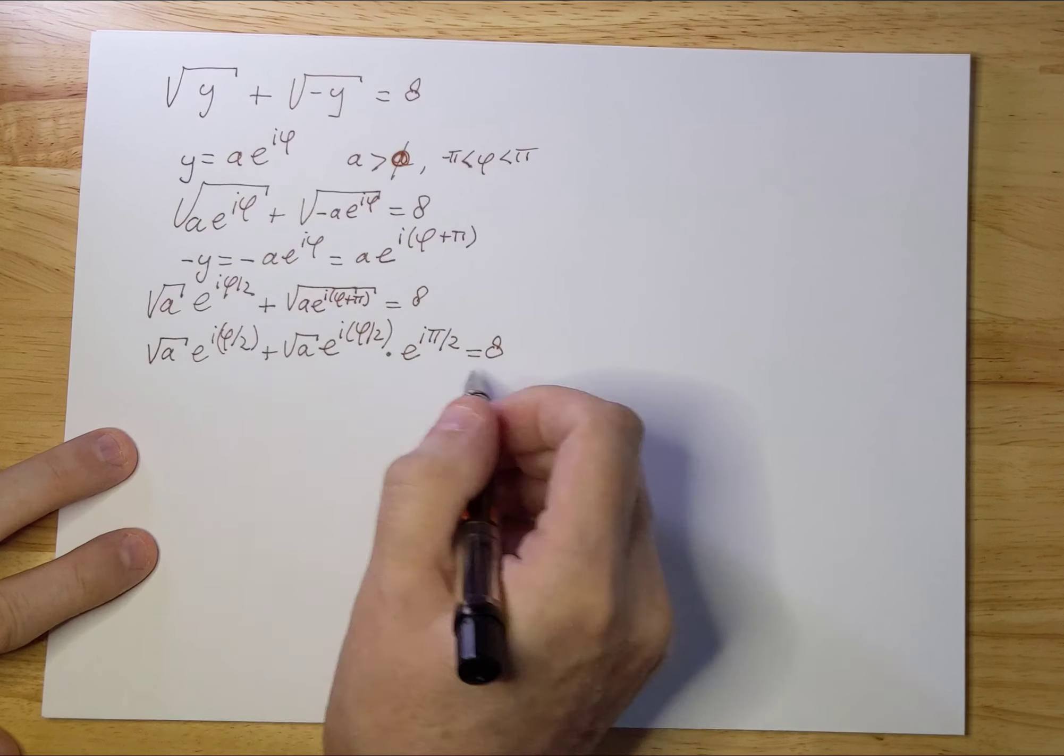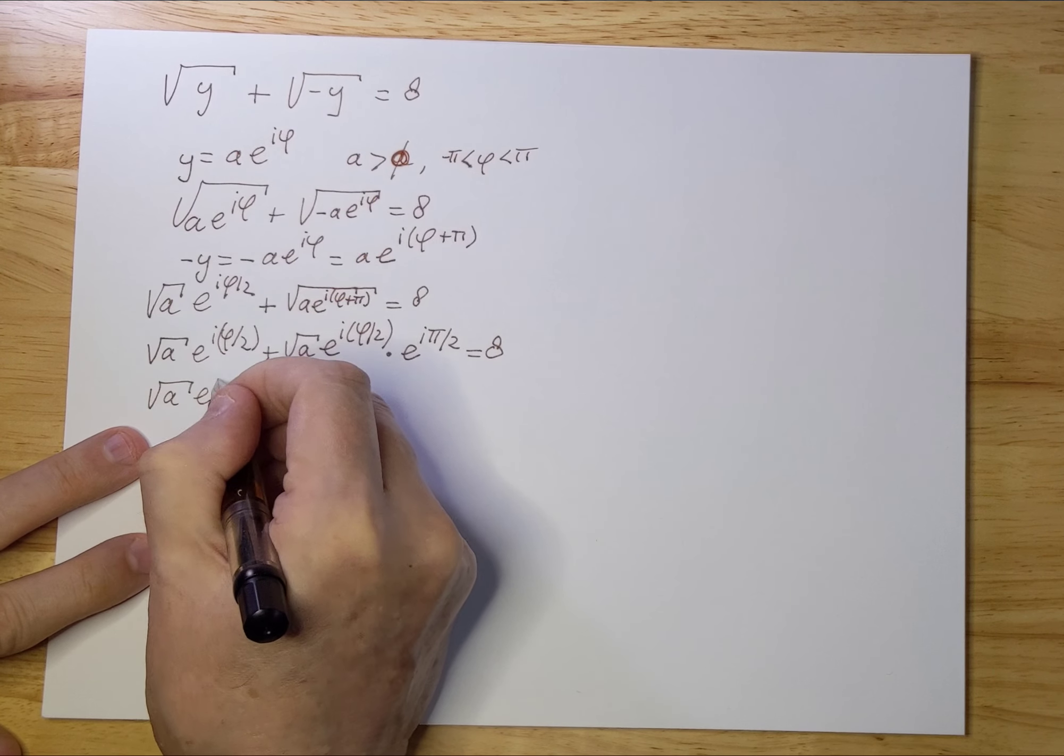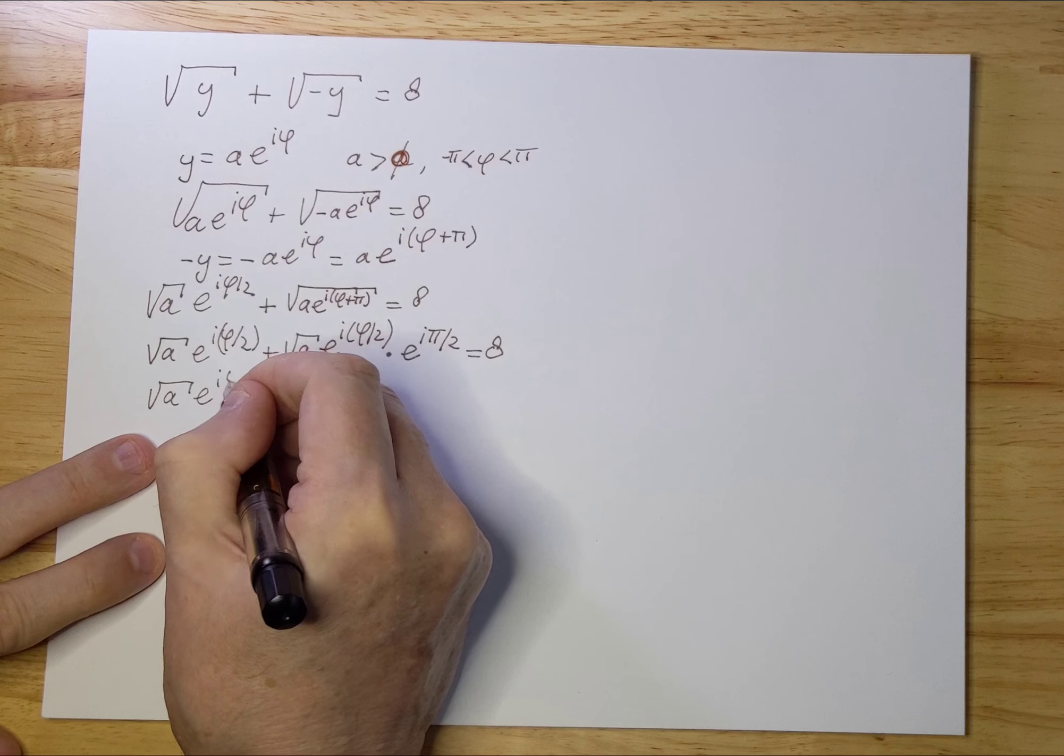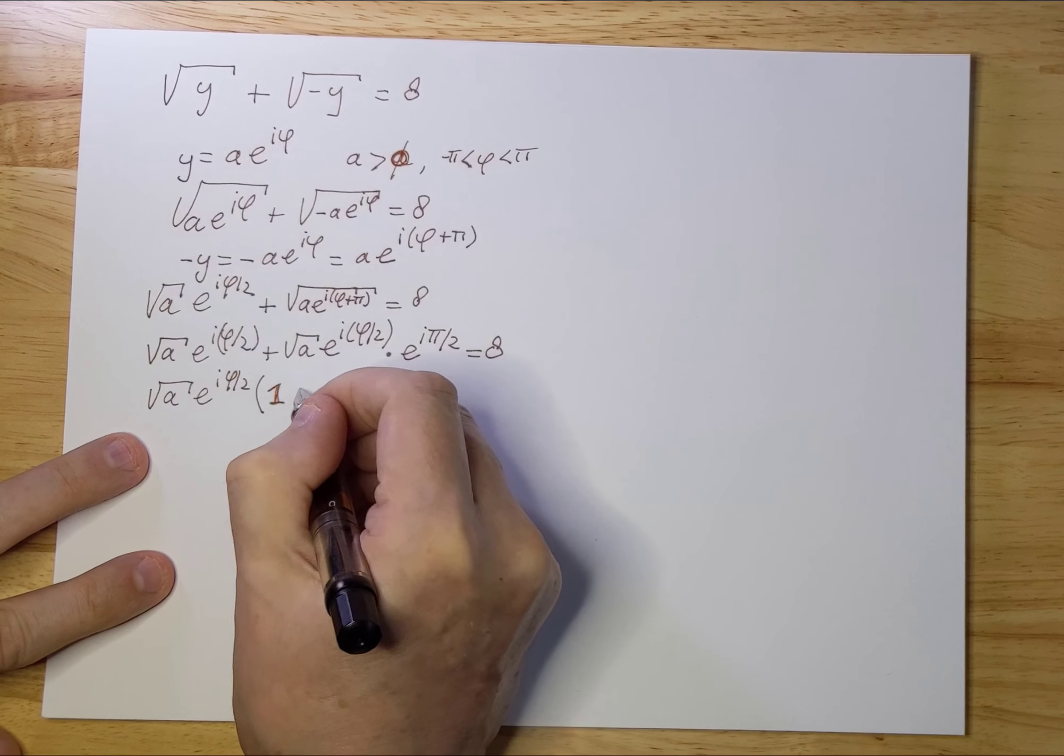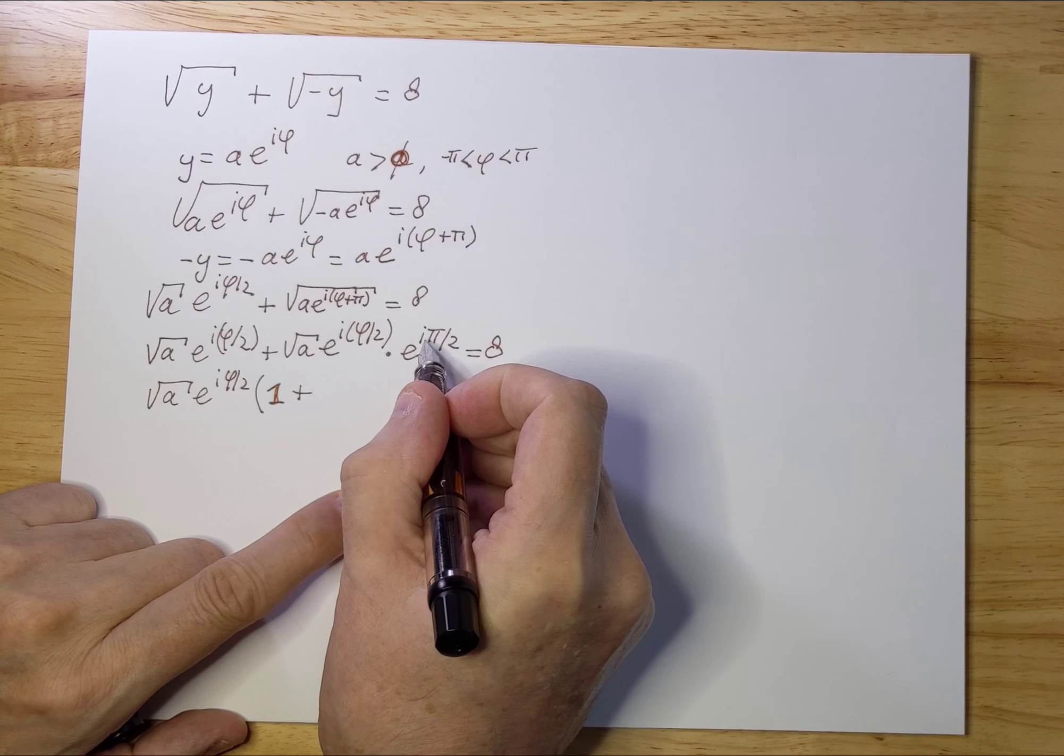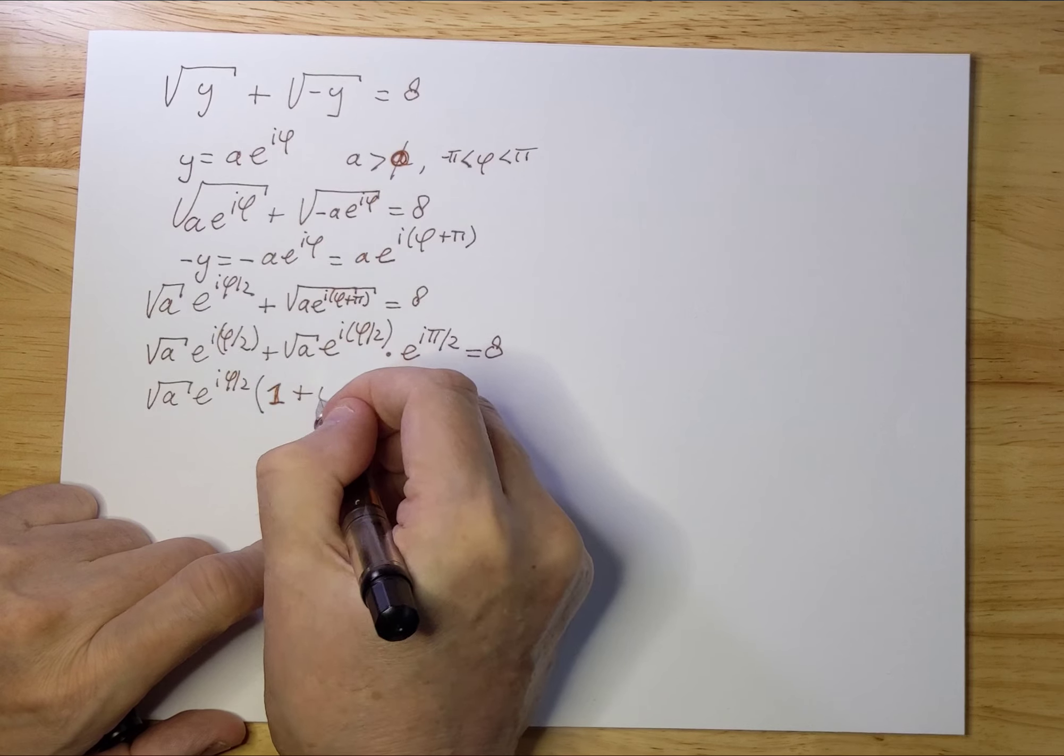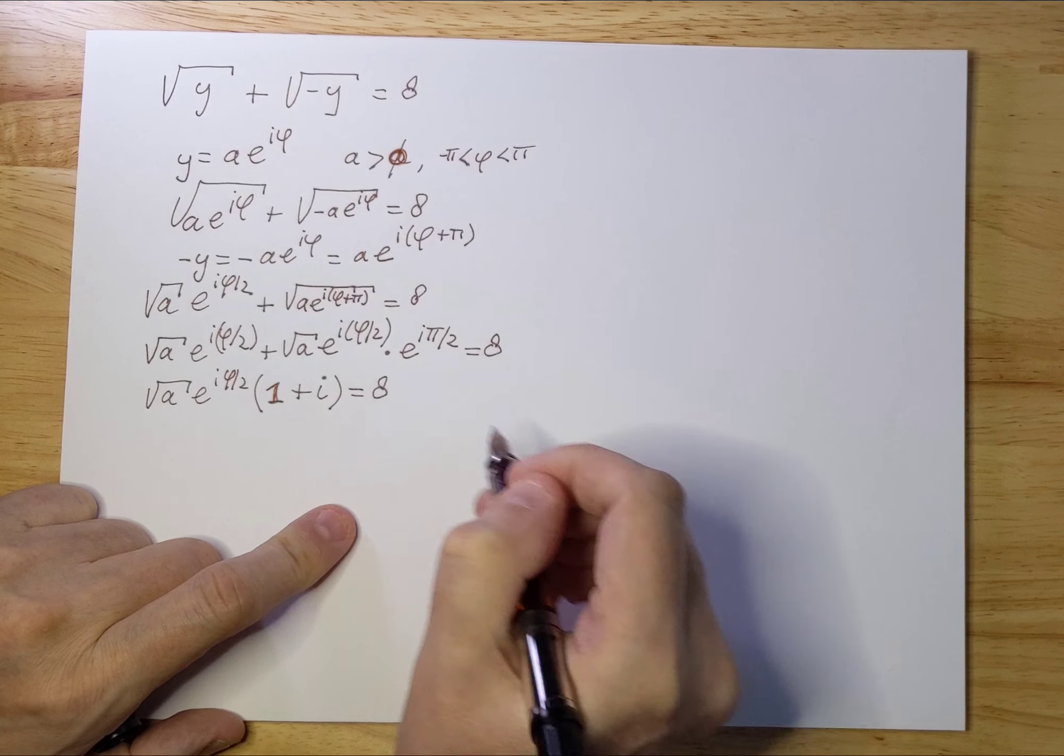So now we can factor out the first piece: √a times e^(i(φ/2)). We take that out and calculate this: e^(i(π/2)) = i. And that gives us 8.